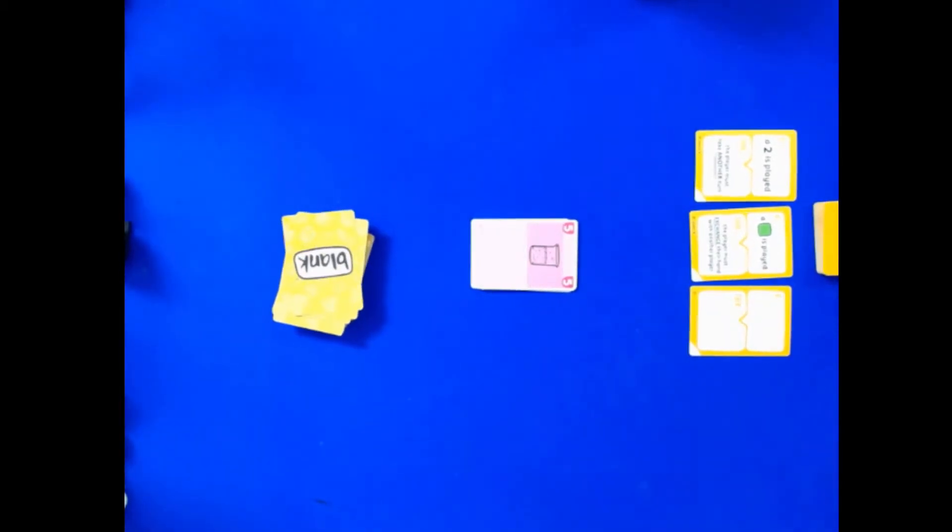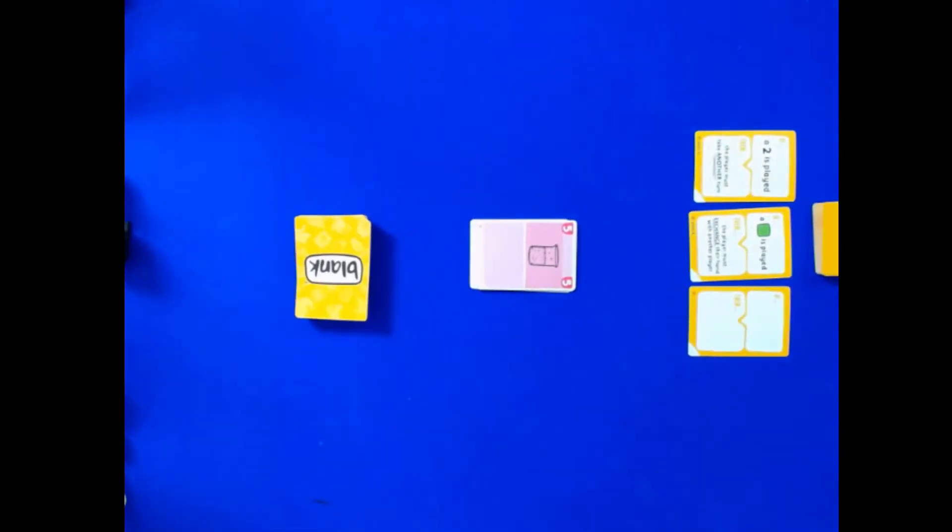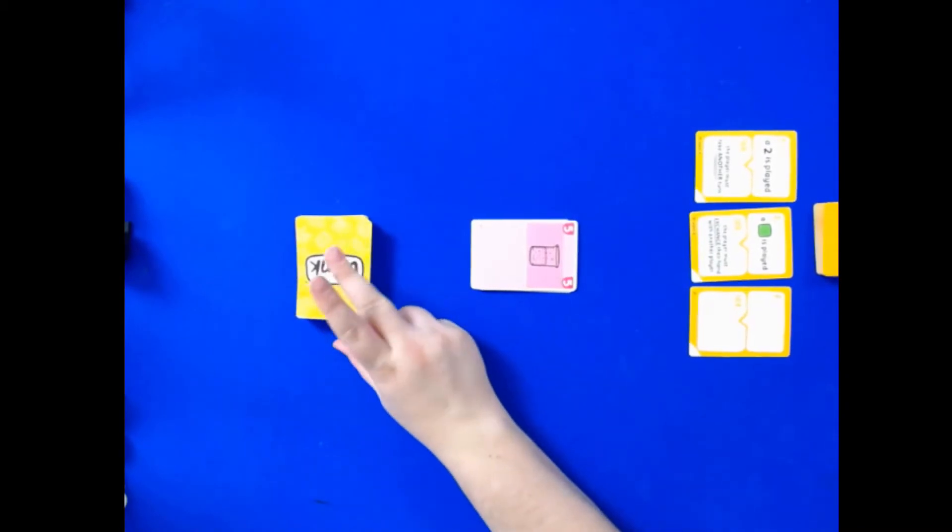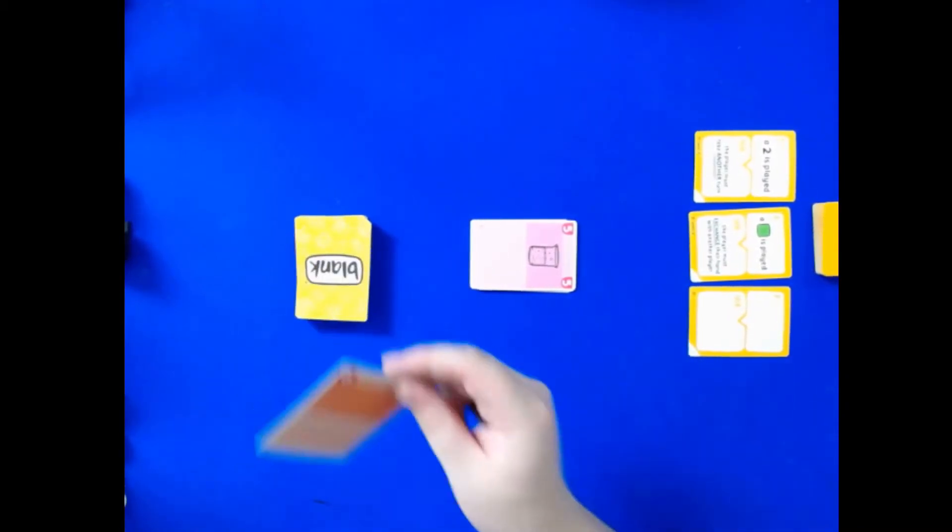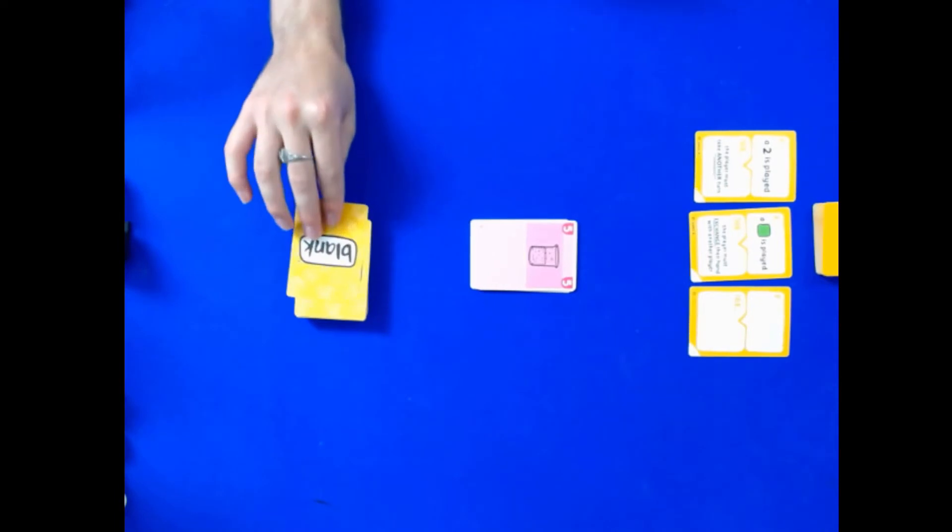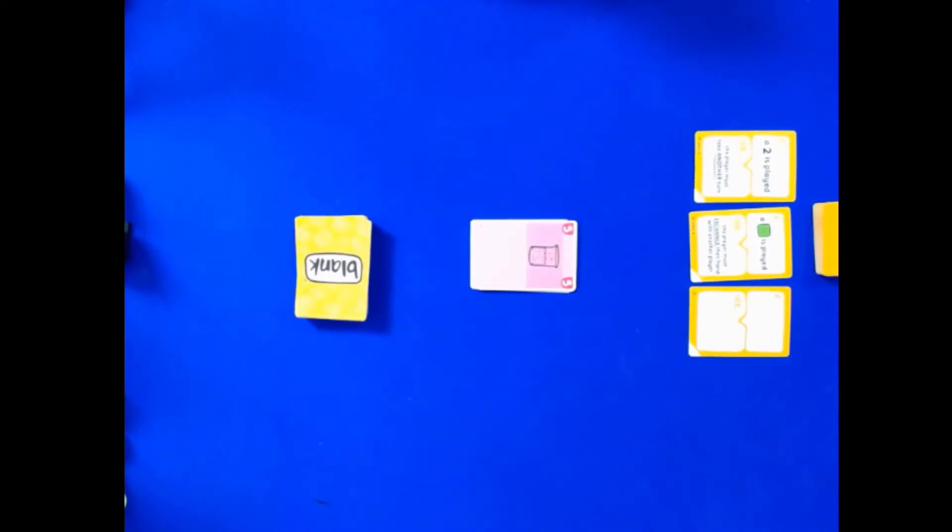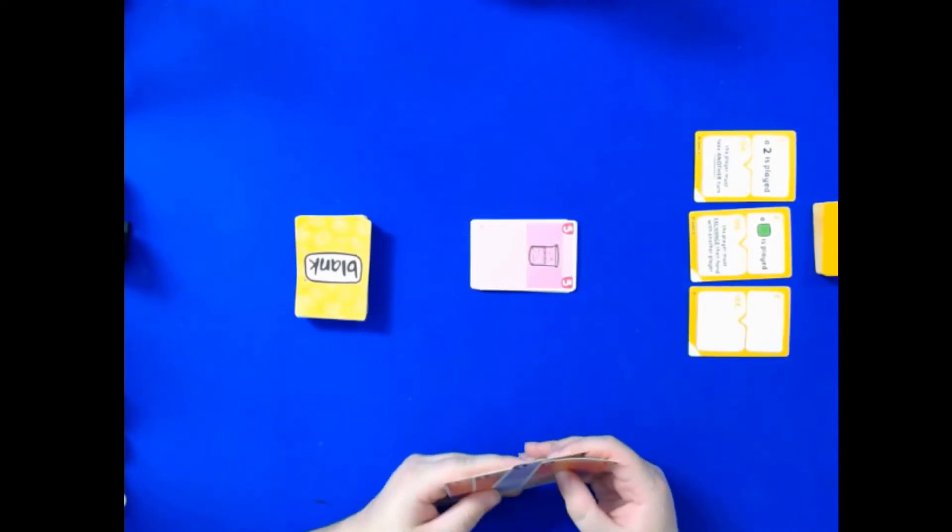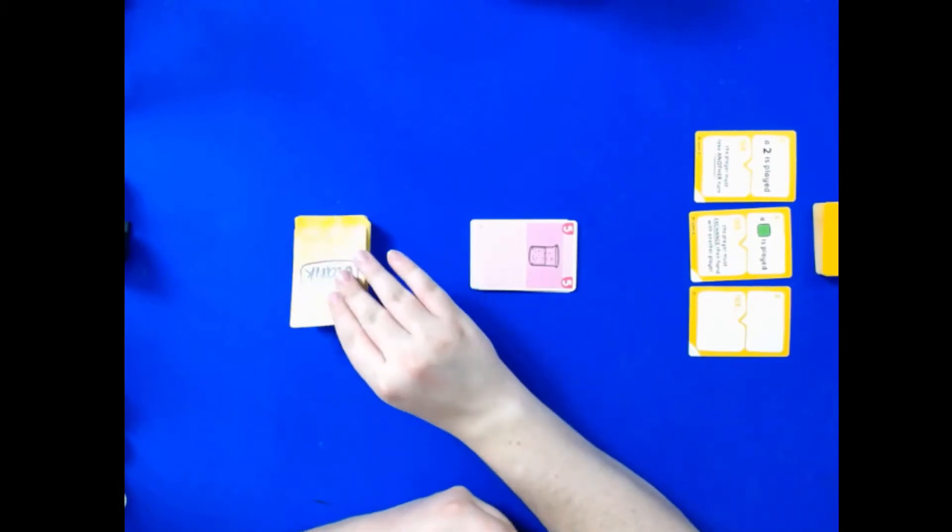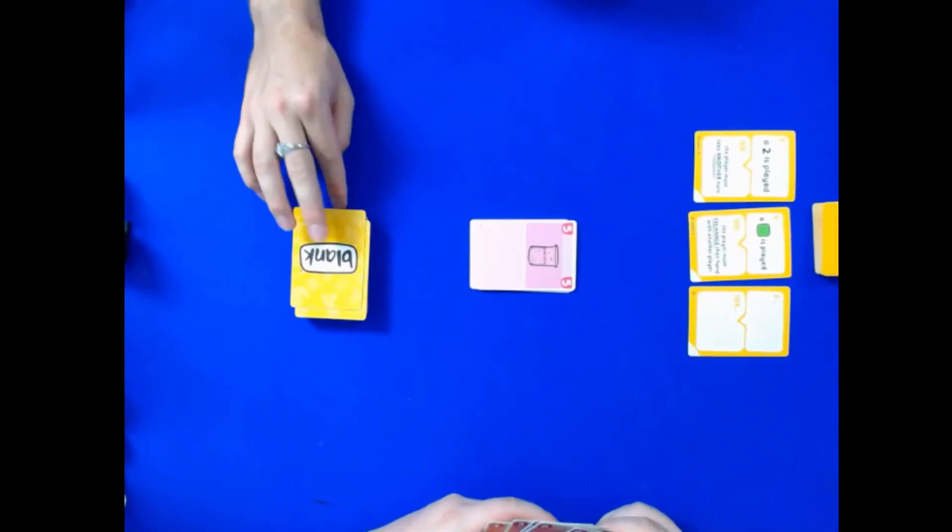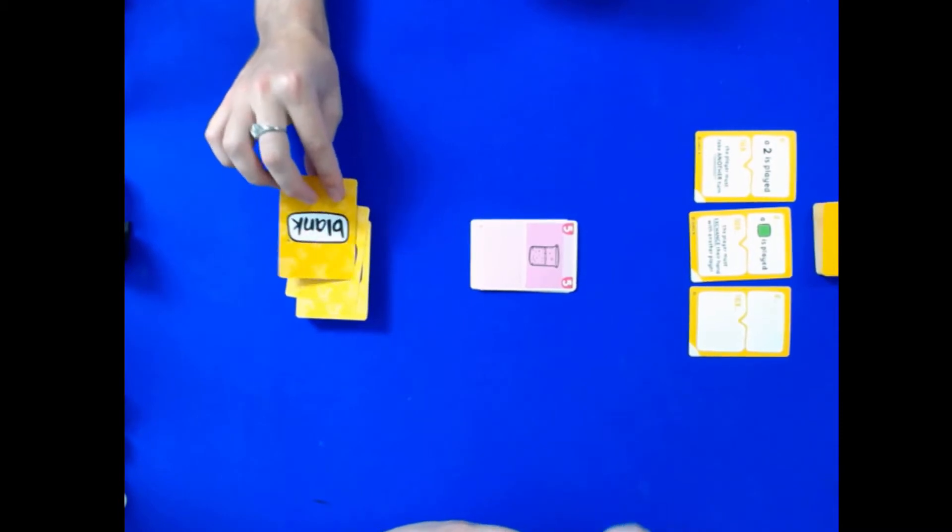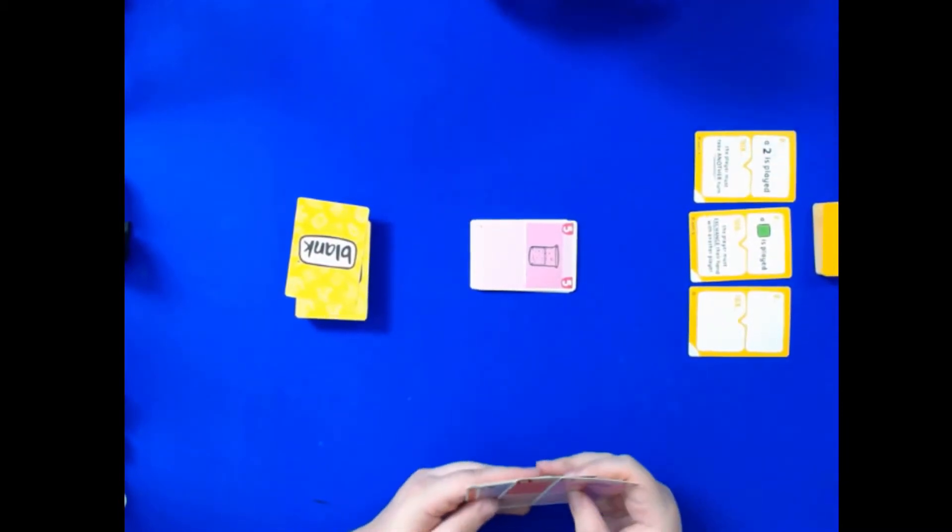Three cards left in hand, same as me. I cannot play. I don't think we're playing with the rules. I have not been keeping track. How many colors are there in this game? There's like six, that's more than Uno. Yeah, there's only four colors.